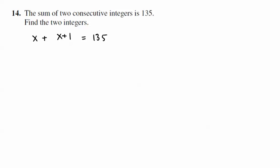If we want to find those two integers, we just solve this equation. x plus x is 2x plus 1 equals 135. Subtract 1 from both sides, and we get 2x equals 134. So then we divide both sides by 2. If you have your calculator, half of 130 is 65, half of 4 is 2, so this should be 67.